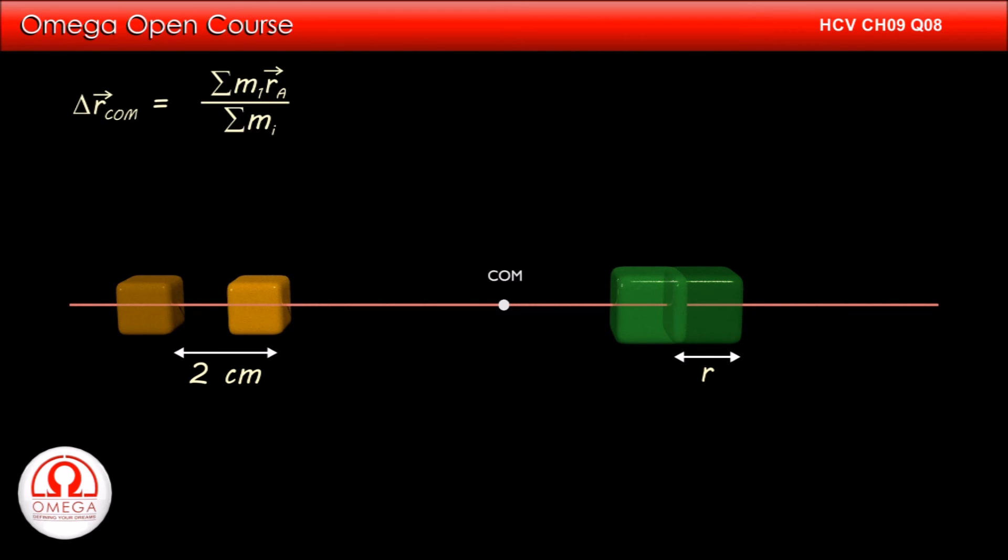Putting the values in the expression, we get 0 is equal to 10 into 2 plus 20 into r divided by 10 plus 20. Simplifying, we get 0 is equal to 20 plus 20 r or r is equal to minus 1 cm.